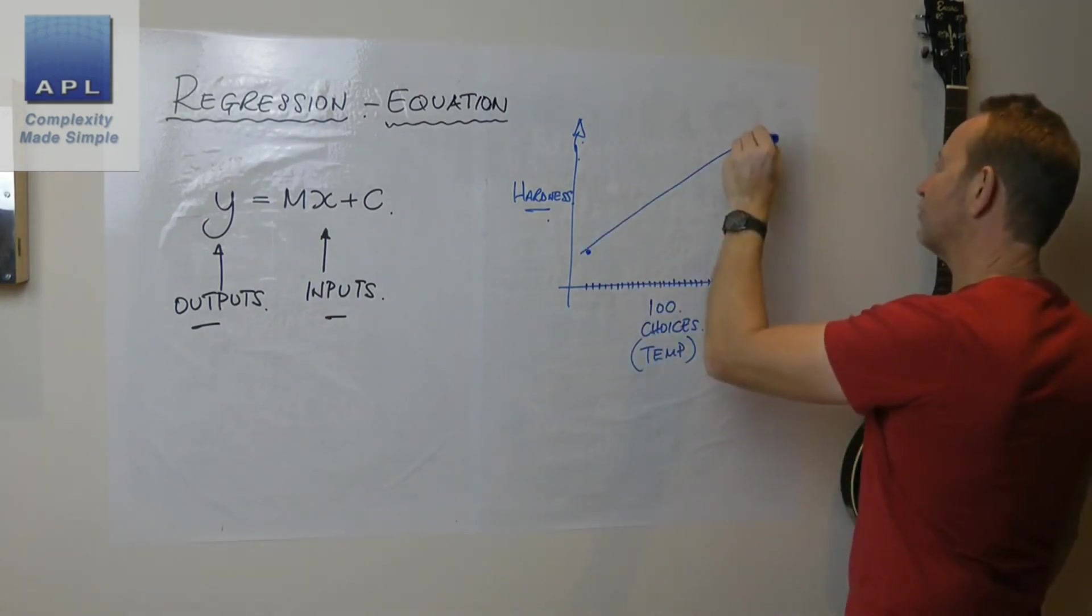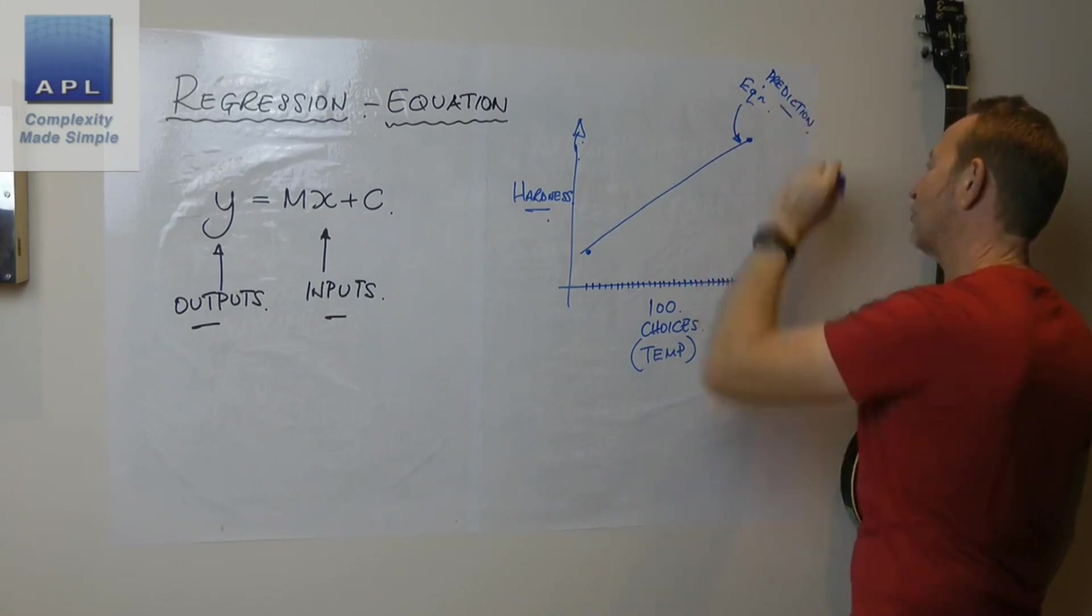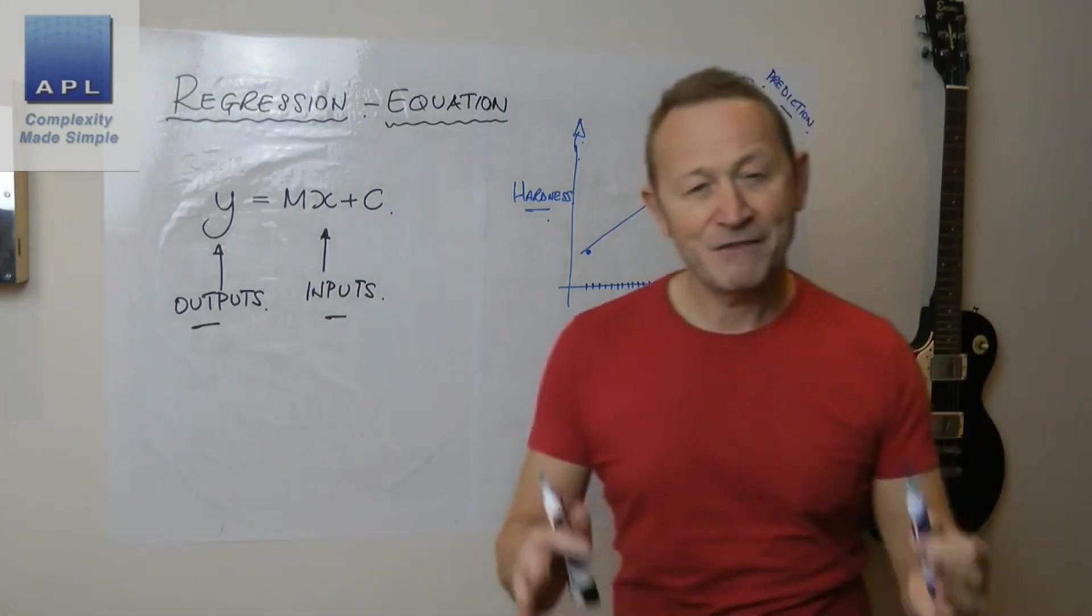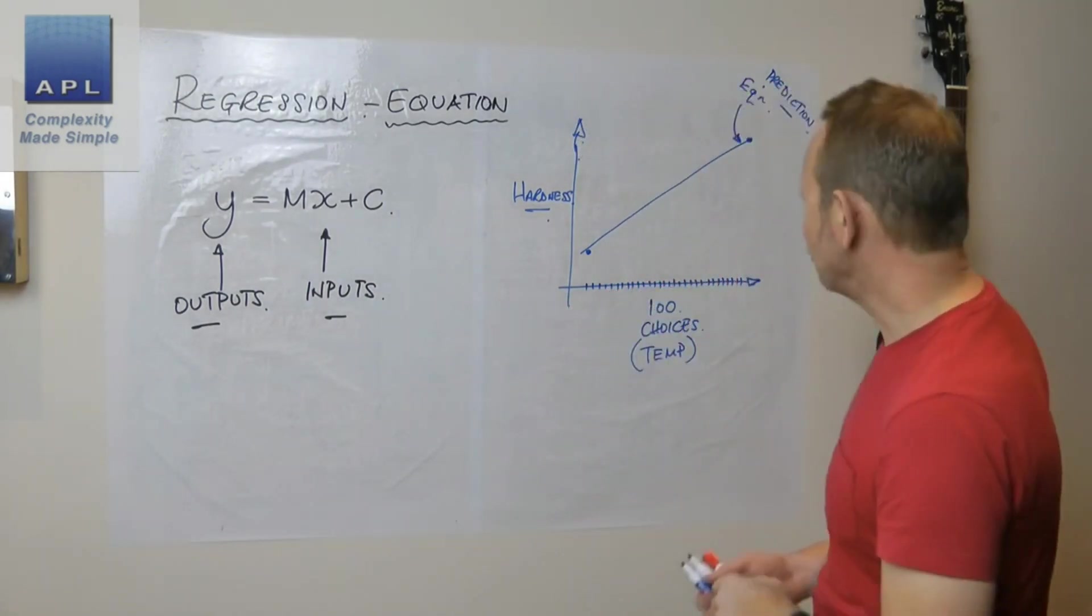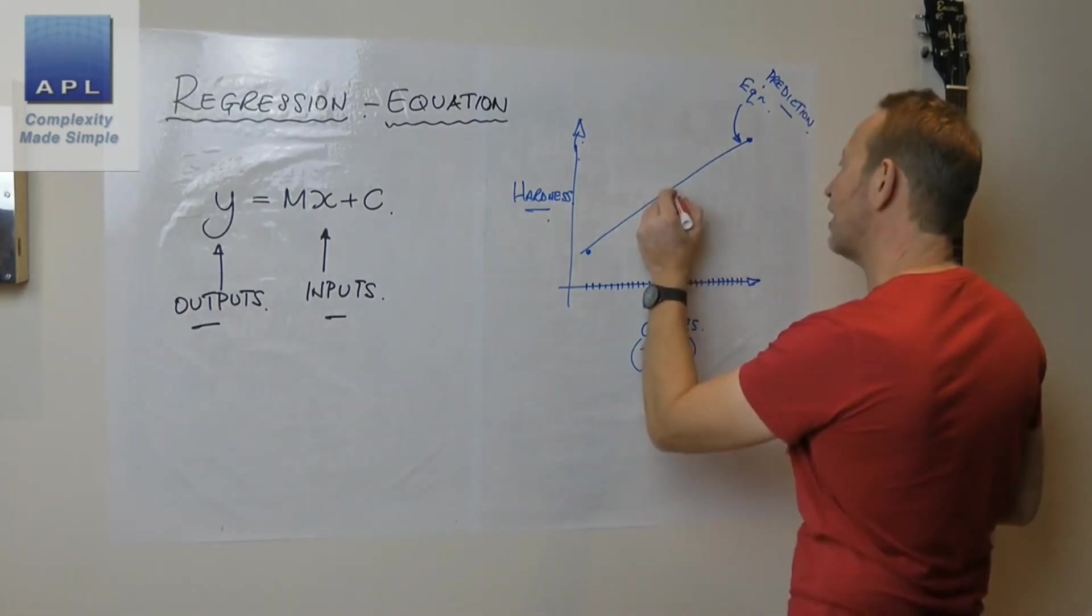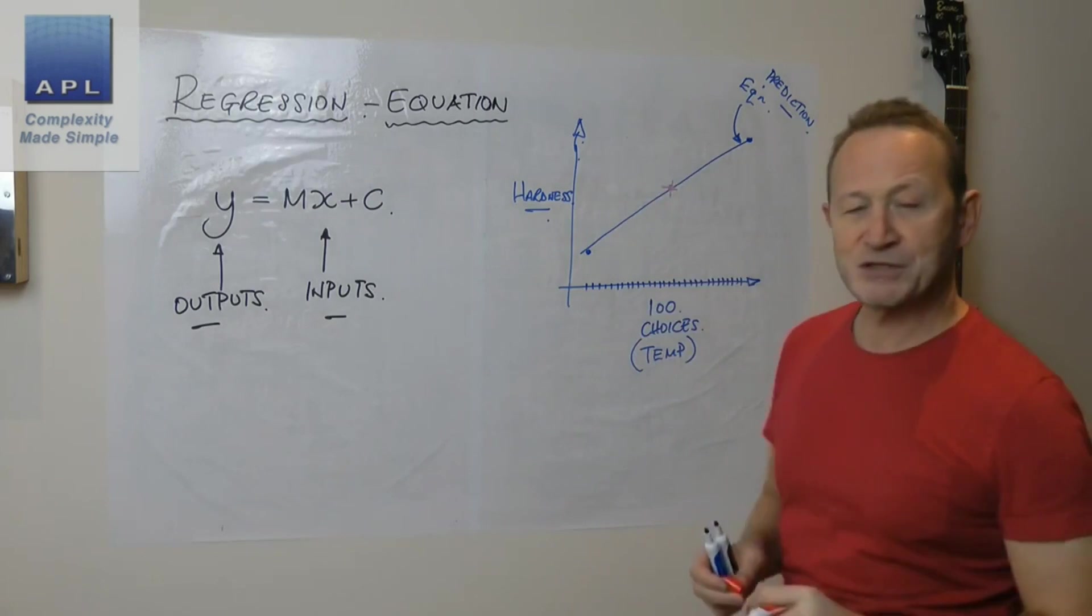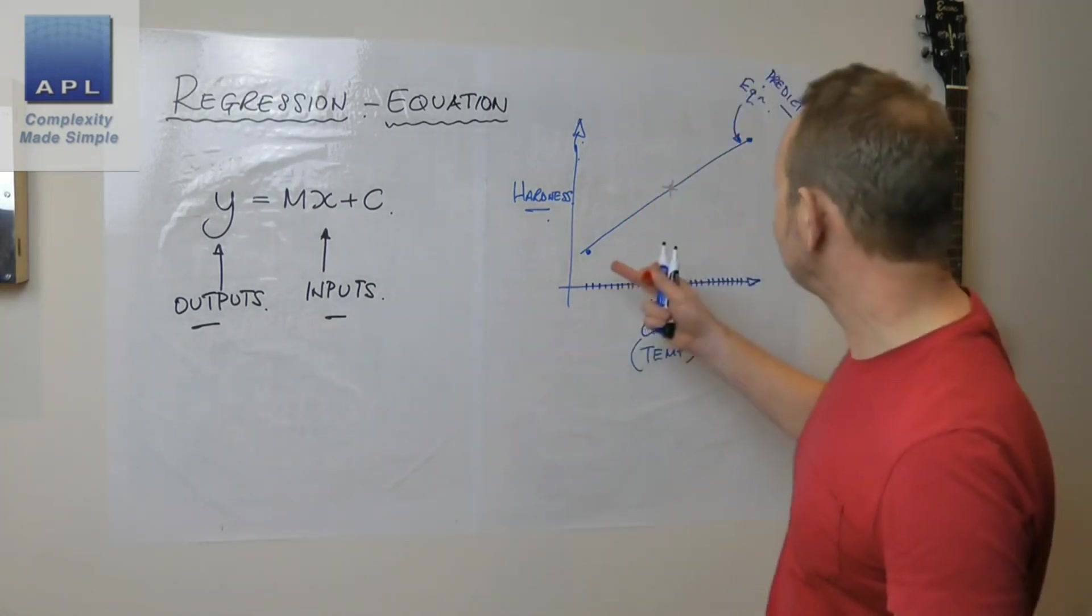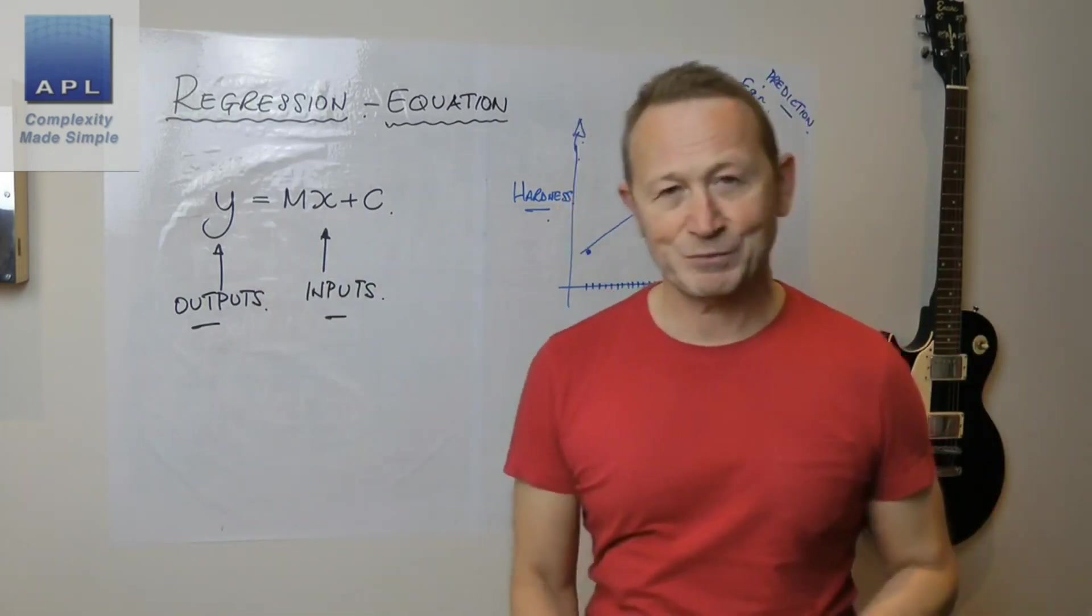You could do a test at the low, you could do a test at the high, you could create a prediction equation. So you create an equation using regression, which creates a prediction equation. Then in order to prove that that equation is true, you would do what's known as a confirmation test, and usually you would do it at some kind of middle value.